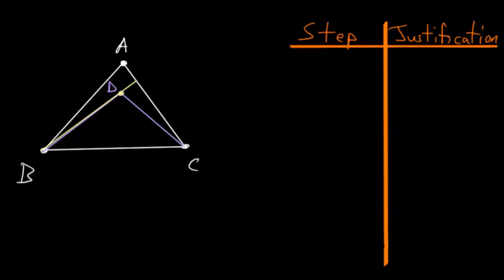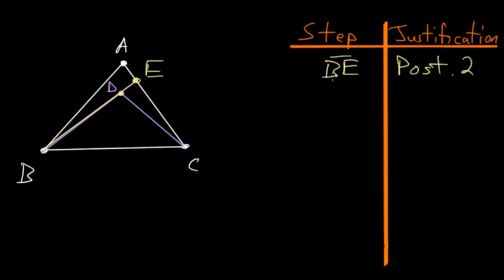To start this proof we want to first extend line BD all the way to line AC, and we can call this point E. So we just created line BE using Postulate 2, which lets us extend lines as far as we wish. Now we want to use Book 1 Proposition 20, which says that within a triangle, if we take any two sides added together — say side AB and AE — these will be bigger than the third side BE.